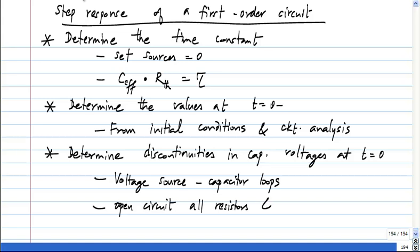You open circuit all resistors and determine capacitor voltages. But anyway, by inspection of the circuit, you should be able to tell whether there are loops containing voltage sources and capacitors or not.